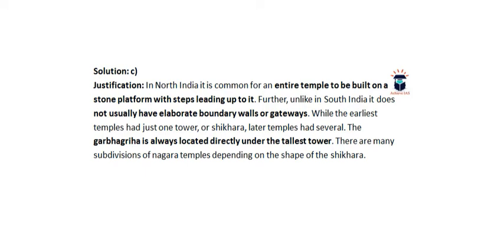While the earliest Nagara temples had just one tower or Shikara, later temples had several. There are many subdivisions of Nagara temples depending on the shape of the Shikara. Earlier there was only one Shikara, but slowly the number increased as the resources of the kings who constructed them grew and as expertise developed.